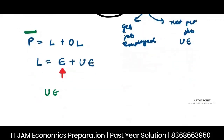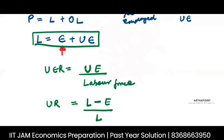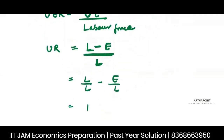What is the unemployment rate? Unemployment rate is the number of people who are unemployed divided by the labor force. I can also rewrite this as: labor force minus employed, divided by labor force. This simplifies to 1 minus E by L. This is the unemployment rate.